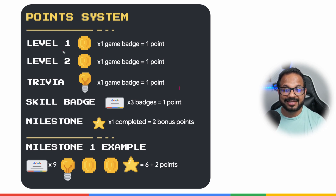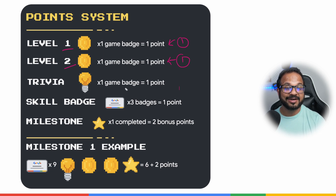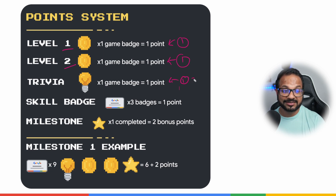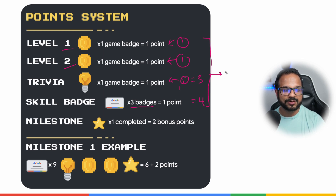Let's talk about how you can earn points and acquire badges. If you complete game one, which is level one, you get one point. Then you complete game two and you get one game badge, which equals one point — so that's two points total. For the trivia game, you get one game badge for each trivia completed, so completing one trivia gives you one point, bringing the total to three. Now, if you complete three skill badges, you get three badges, and three skill badges constitute one point — bringing the total to four points.